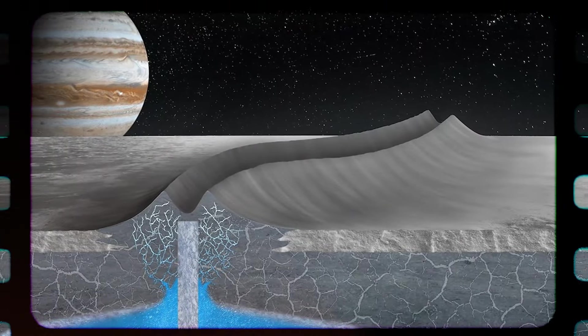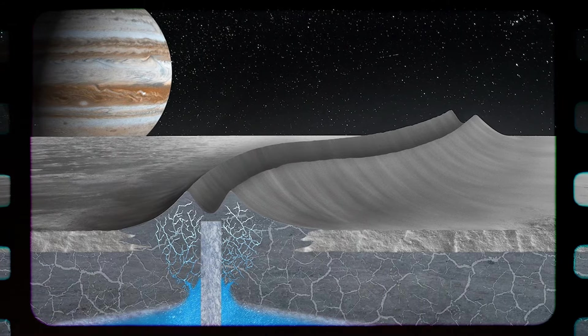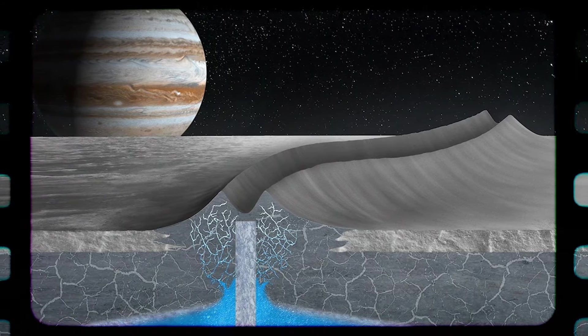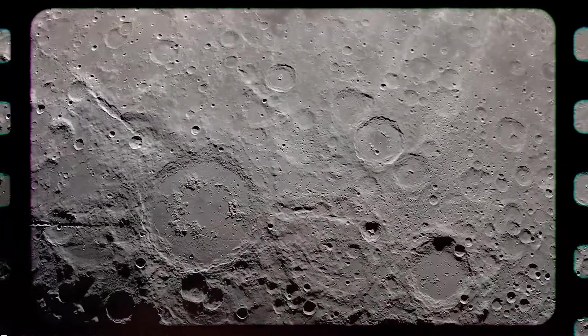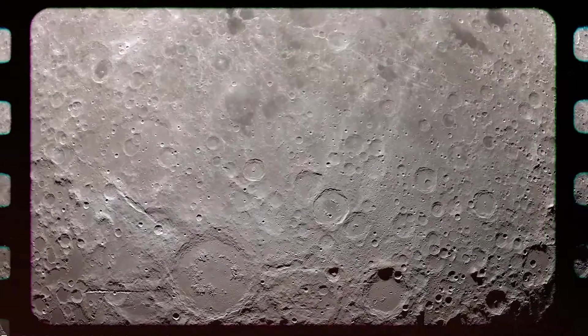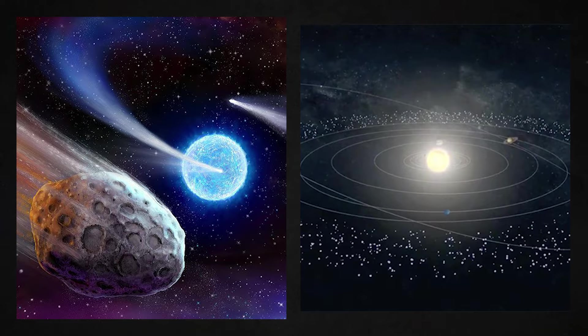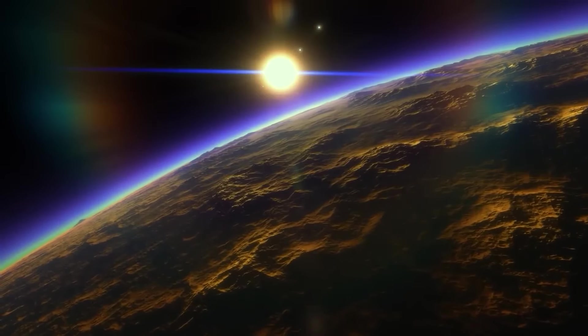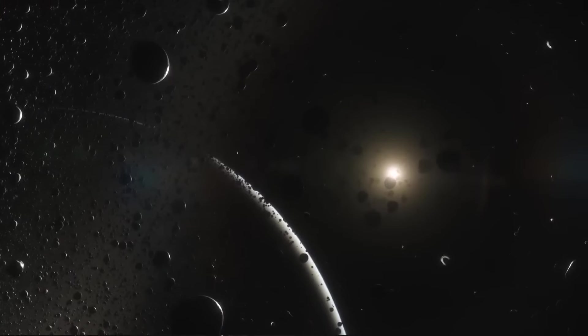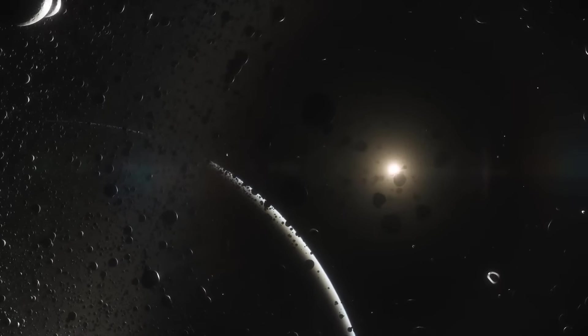Many moons exhibit unique properties such as volcanic activity, subsurface oceans or thick atmospheres. These characteristics make moons intriguing objects for scientific exploration and research, offering insights into planetary evolution, potential habitability and the diversity of celestial bodies within our solar system. Other vital components of our solar system are comets and Kuiper belt objects. These are icy bodies found in the outer regions of our solar system, each contributing to our understanding of its formation and evolution.